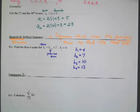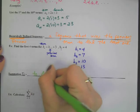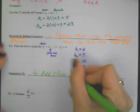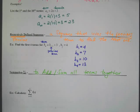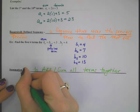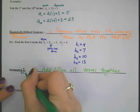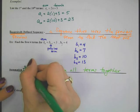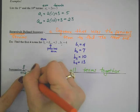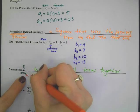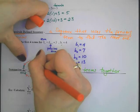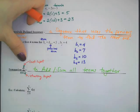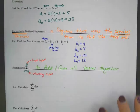Summation means to add or sum all the terms together. First you find all the terms, then add them together. Here's how it works: below the sigma sign it says n equals — let's say n equals 4 — that's the starting input. Above the sigma sign it says something like 8 — that's the last input. That's not necessarily the answer; that's just the input.